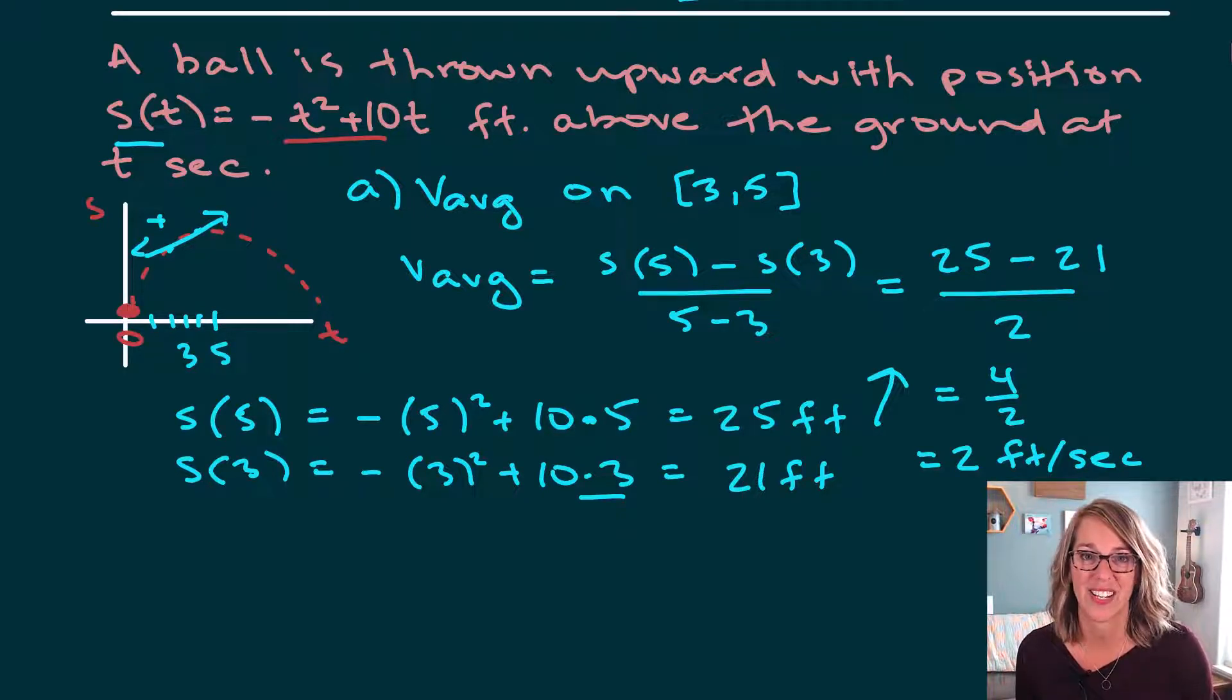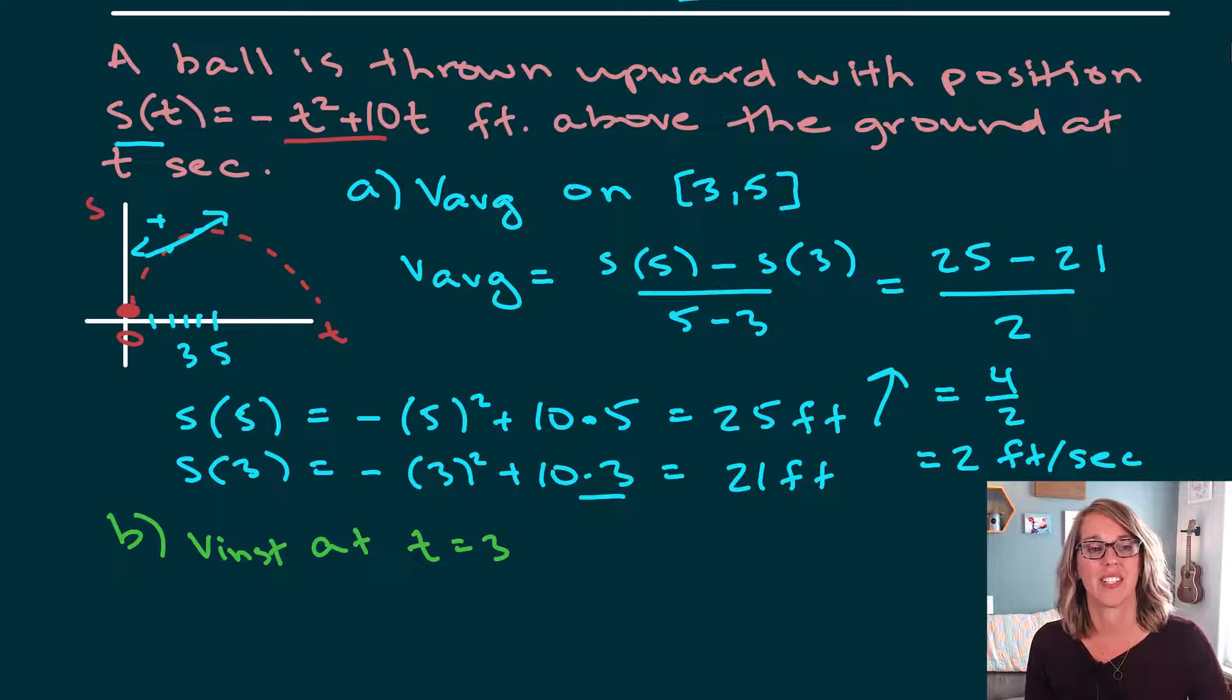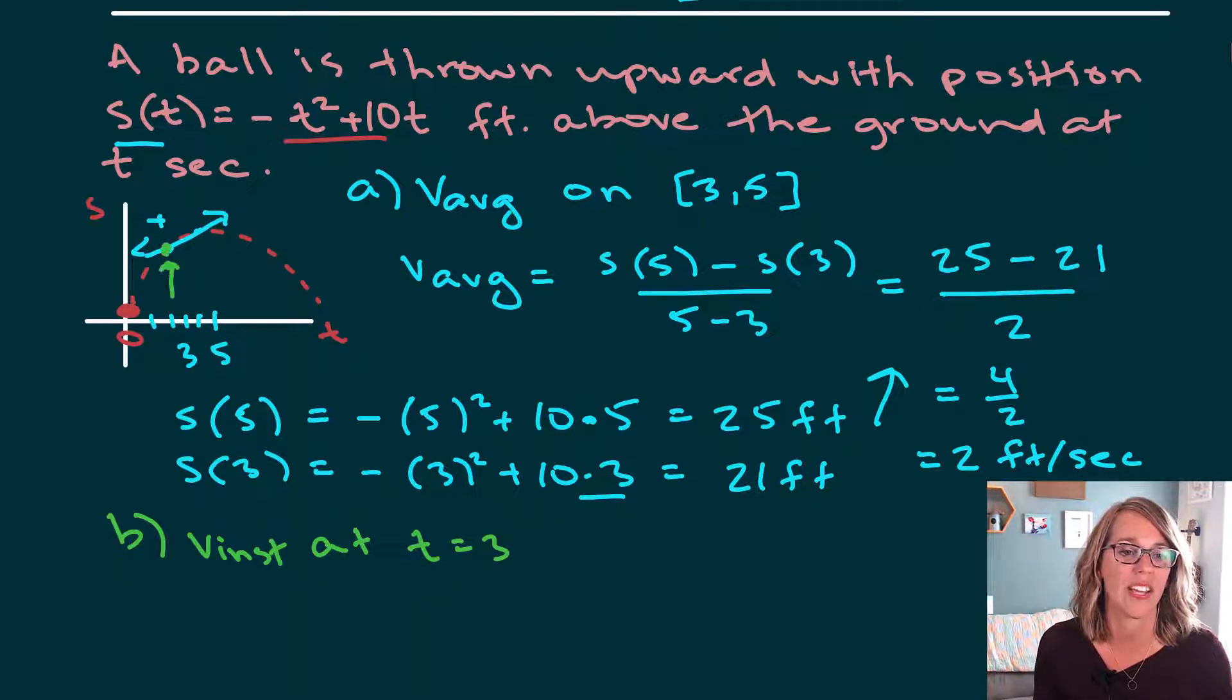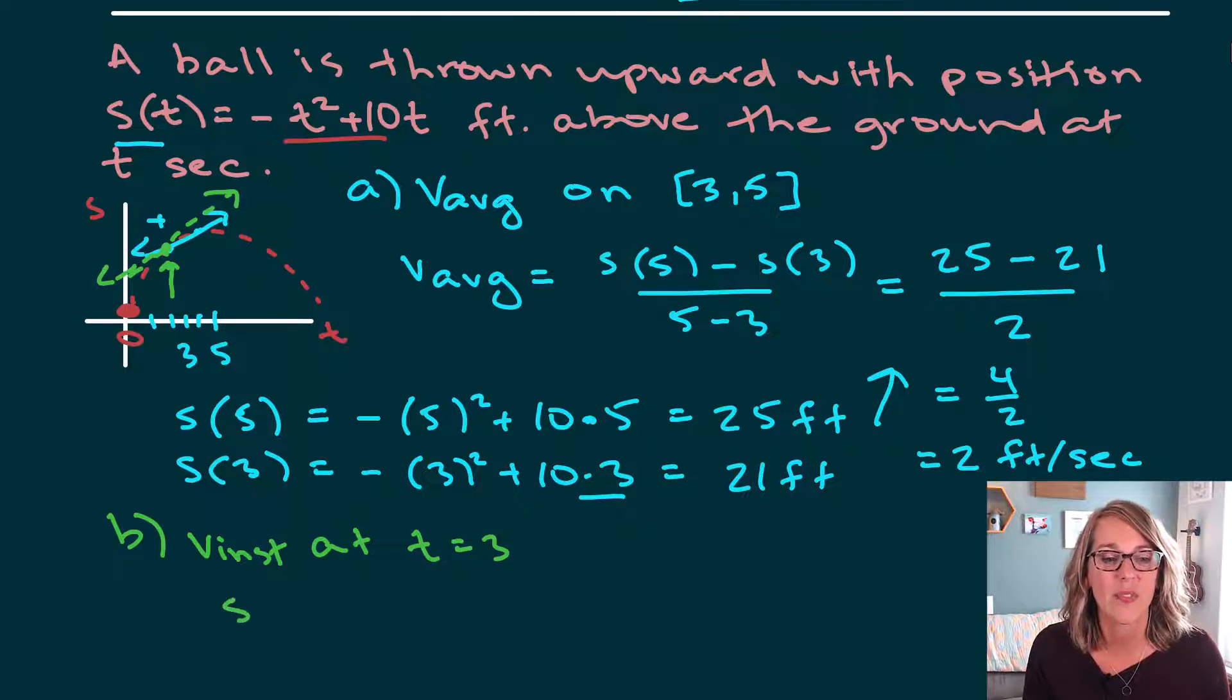Let's do an instantaneous velocity next. Next, we're going to find the instantaneous velocity. Let's do the instantaneous velocity at time equals three. Well, to find an instantaneous velocity, that would be at this moment in time here at three. I am really looking for the slope of that tangent line, which is kind of like this one. So I'm looking for the slope of that tangent line.